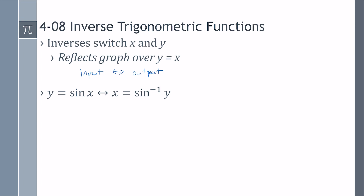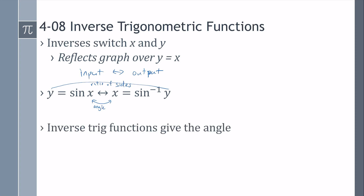So if we have y equals sine of x, the inverse would be x equals the inverse sine of y. In this case, x is the angle and y would be the ratio of the sides of a triangle. So x is our angle because it's the input of sine. The input of inverse sine is the ratio of the sides and it gives you the angle. Inverse trig functions give the angle.